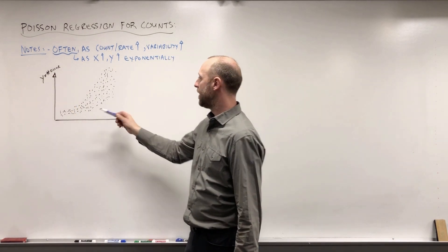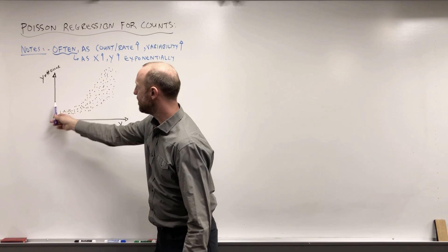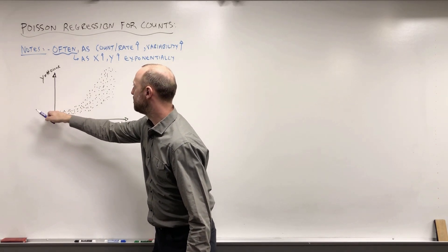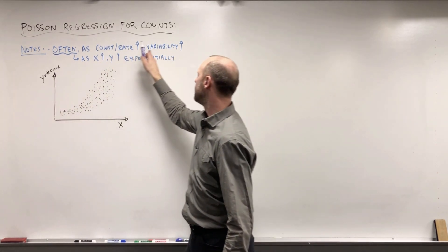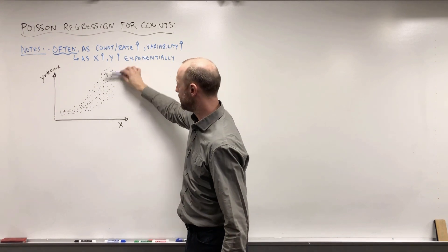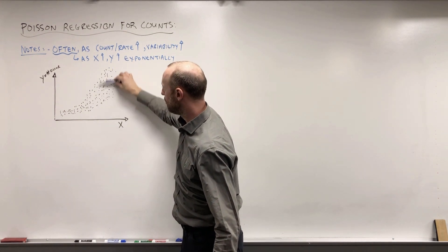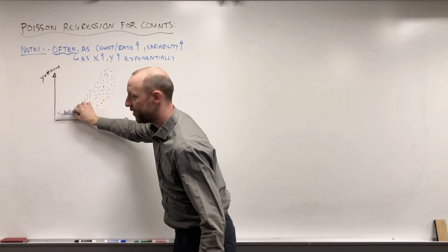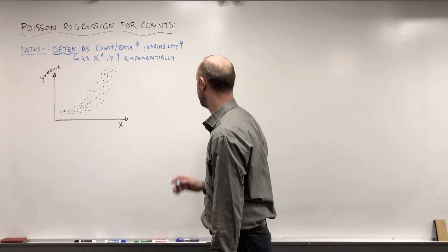As that increases, as the expected number of occurrences gets higher, the variability tends to increase. So we see a lot more variability up here for a high expected number of occurrences than down here for a low expected number of occurrences.